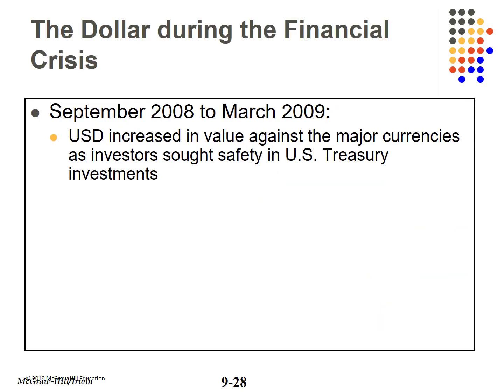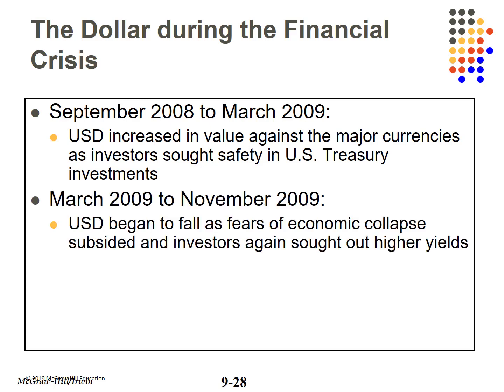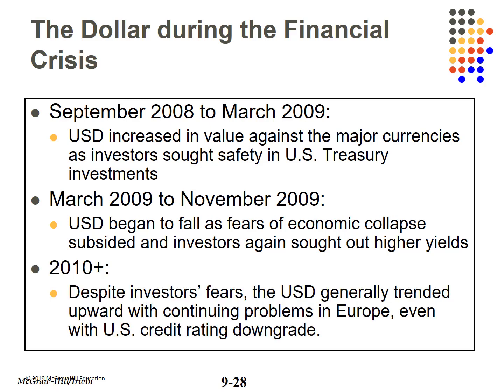During the financial crisis in 2008 and 2009, the US dollar increased in value against most major currencies, as investors worldwide sought safe havens in US Treasuries. In 2009, the US dollar began to fall as investors looked for higher yields. From 2010 on, the US dollar trended up, even as the US credit rating was downgraded.